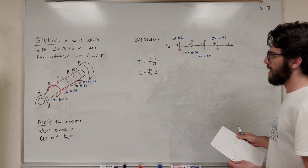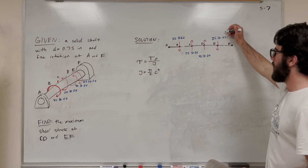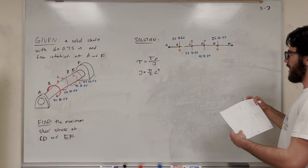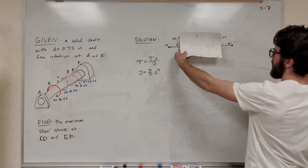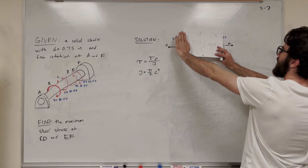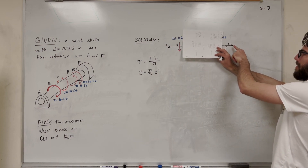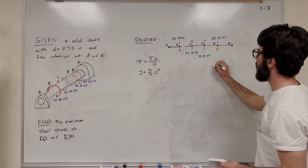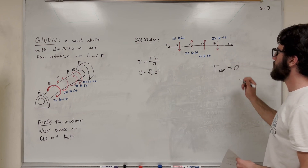If you want to find what the internal torque is at those points, let's start with EF. We can take a cut at any point and work down any side. I'm going to take a cut and cut off basically everything to the right. So you can see F — any point between E and F — it's going to have no torque in it. So the torque E to F is equal to zero.